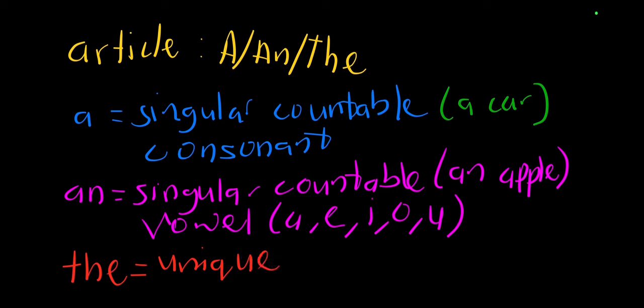For example, 'an apple', 'an umbrella', 'an iron', 'an author'. So anything that has a vowel sound, you have to use article 'an'. Basically, 'a' and 'an' are pretty much the same, except for the consonant and vowel sound.